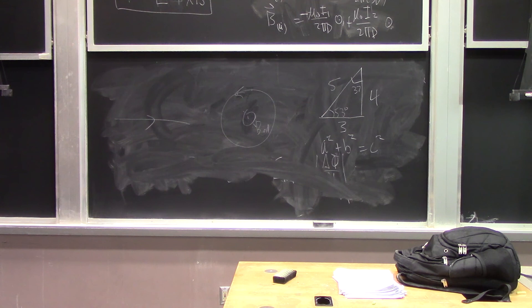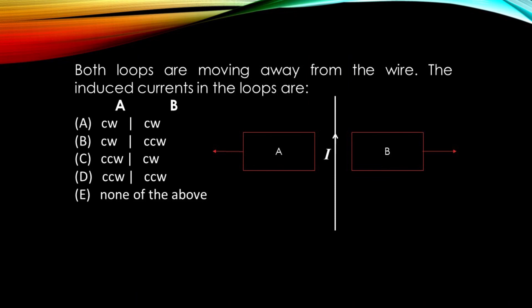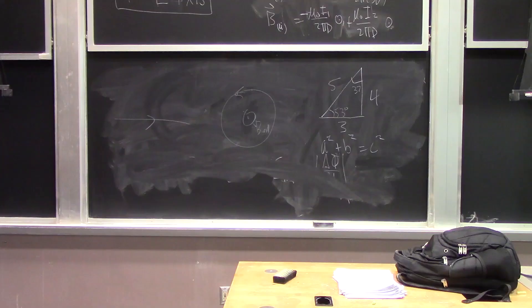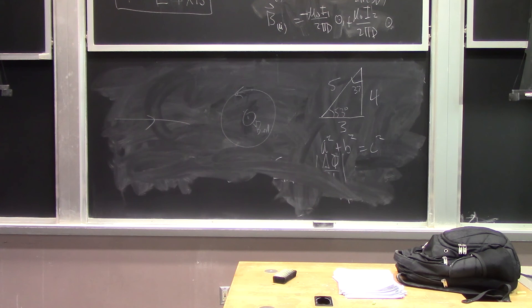We have one more question: two loops A and B are near a current-carrying wire, and we're pulling both loops away from the wire. The wire's current produces a magnetic field, and as we move the loops away, the flux through them changes. What should the direction of the induced current be in loops A and B to oppose that change? We'll discuss this one more and the skipped question next class. Have a good day and see you Thursday.